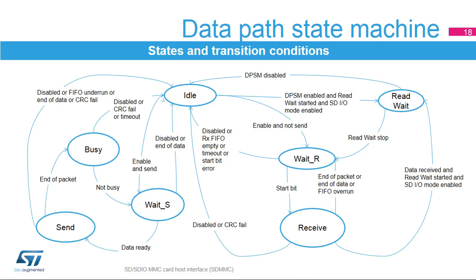The Datapath State Machine (DPSM) controls the transmission and reception of all data. When the DPSM is in idle state, the first transition is triggered when the DPSM enable bit and transfer direction are set. For data transmission, when enabled, the DPSM moves from idle to wait S and then to send state. While in the wait S state, the DPSM waits until the data FIFO empty flag is deasserted. When data is available in the FIFO buffer, the DPSM moves to send state where it starts sending data to a card according to the bus width set in the control register. At the end of the data packet, the DPSM sends an internally generated CRC code and end bit and moves to the busy state.